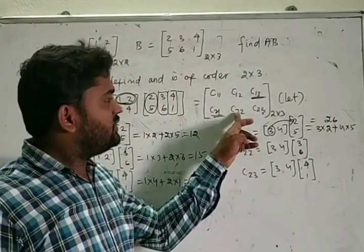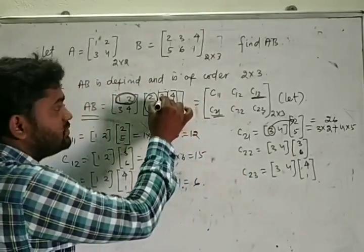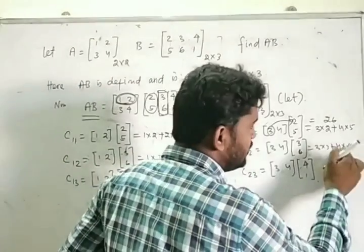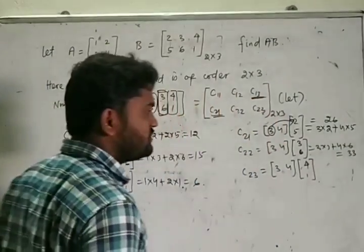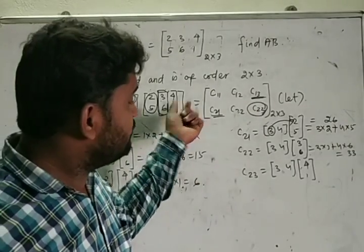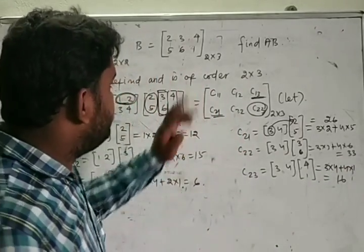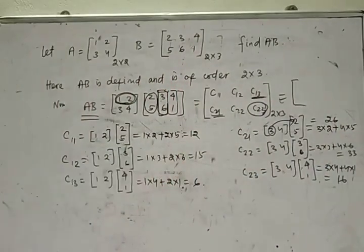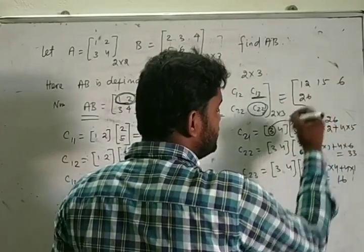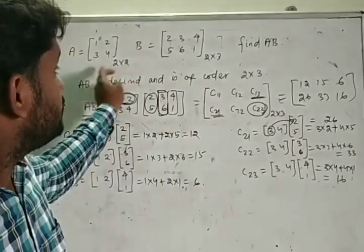The element C22 is defined by multiplying the second row of matrix A with the second column of matrix B: 3×3 + 4×6 = 9 + 24 = 33. Similarly, C23 is defined by multiplying the second row of matrix A with the third column of matrix B: 3×4 + 4×1 = 6. So the product matrix C has elements C11=12, C12=15, C13=6, C21=26, C22=33, and C23=6. I hope you understand how to find the product of two matrices.